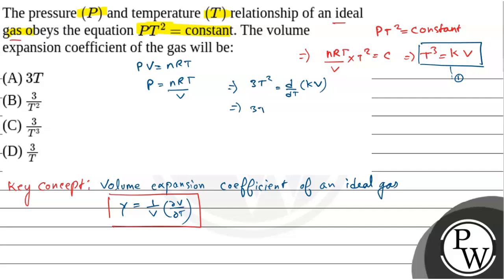This equals 3T² equals the constant K into dV by dT. So we have to find dV by dT, the expression that is 3T² by K.